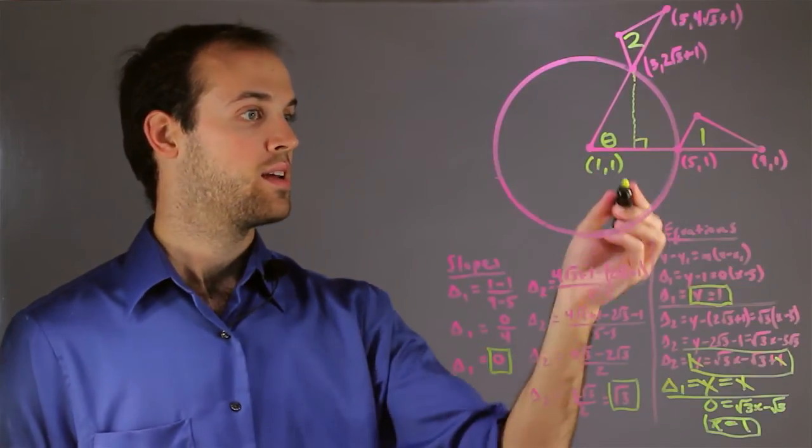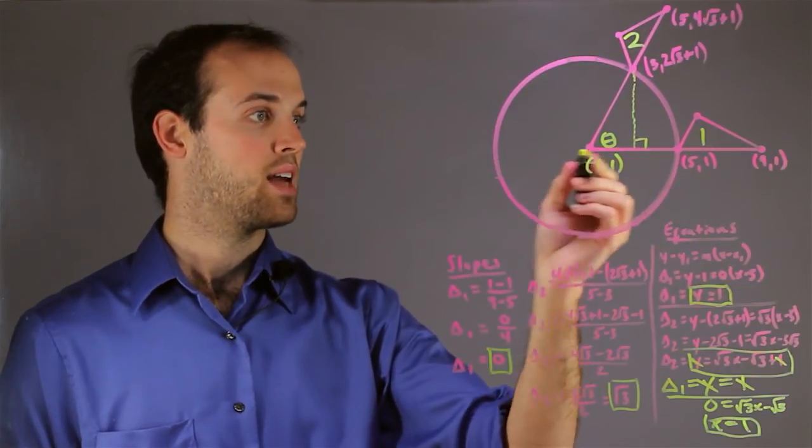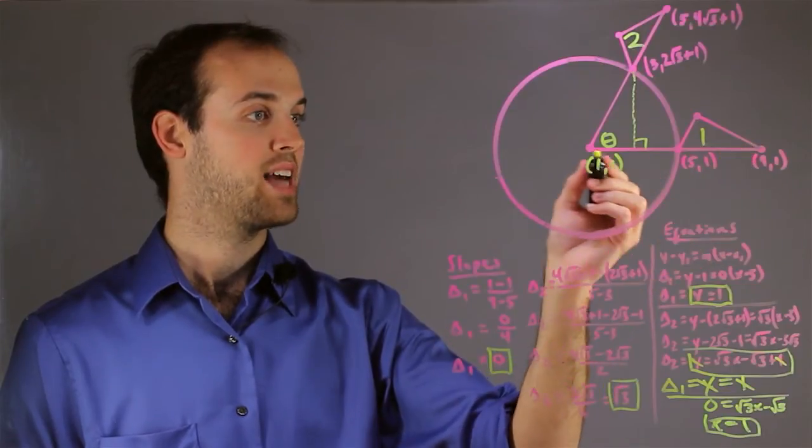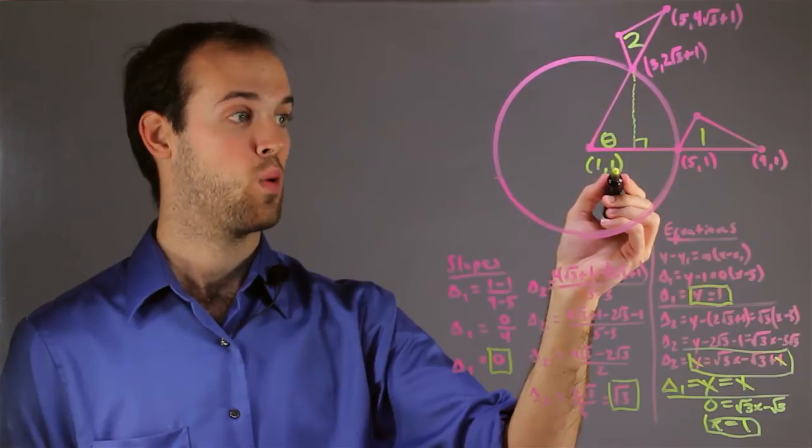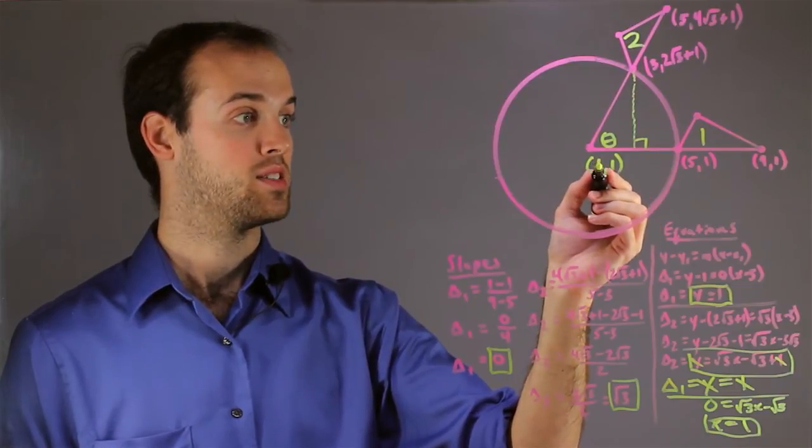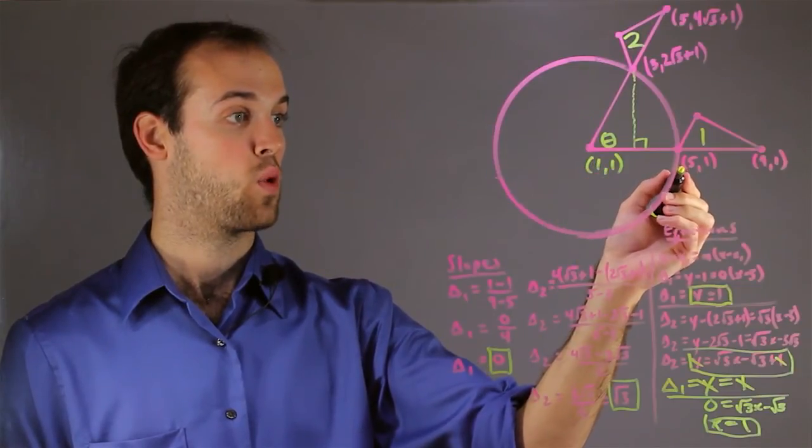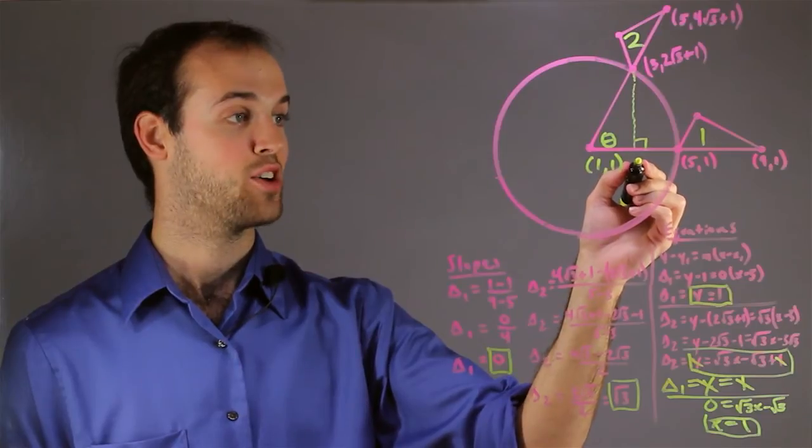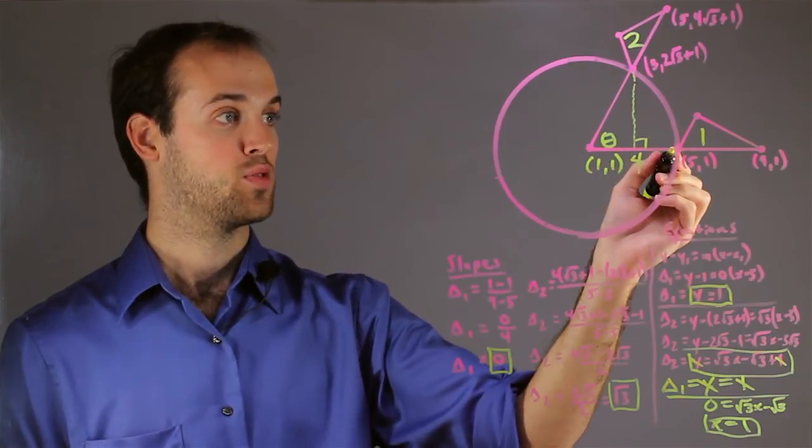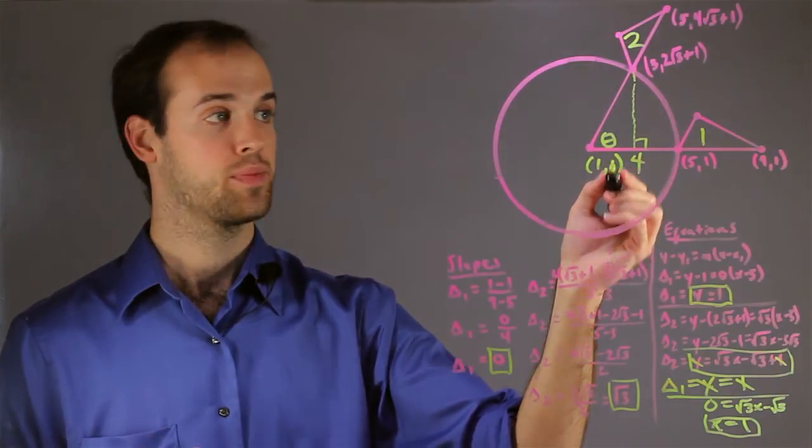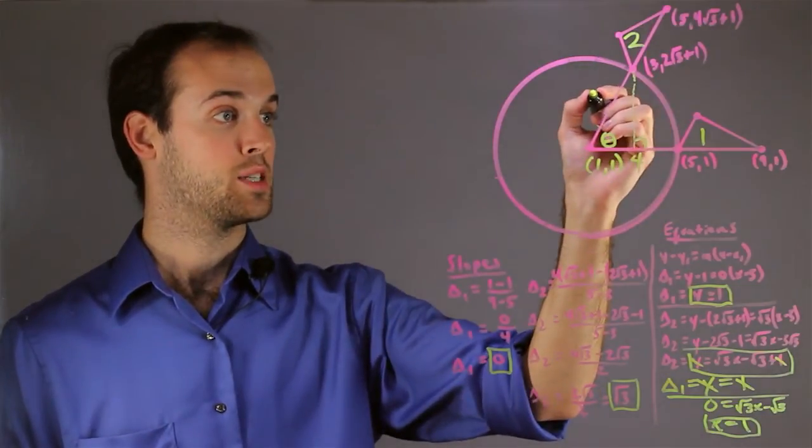Now, again, if I look at the base of triangle 1, I can tell that this distance right here, this radius, must be 4, because the distance between the x-values is 4 and the y-values don't change. So if I know that that radius is 4, all radii are congruent, so I know that this radius must be 4.